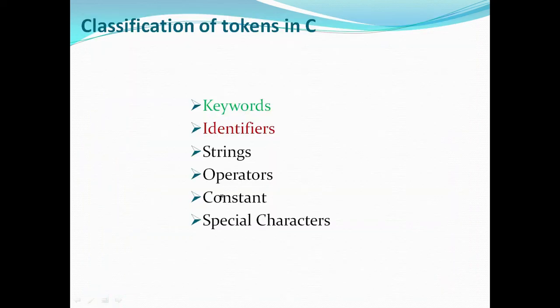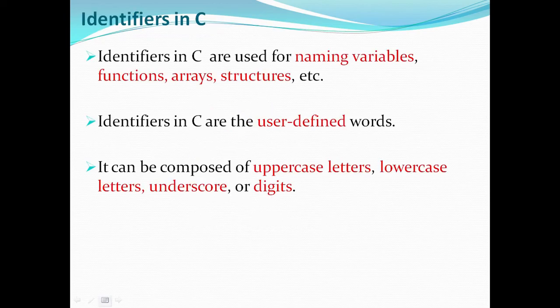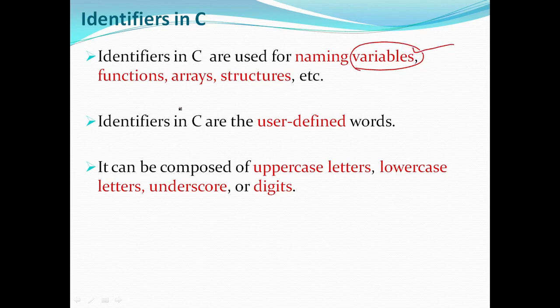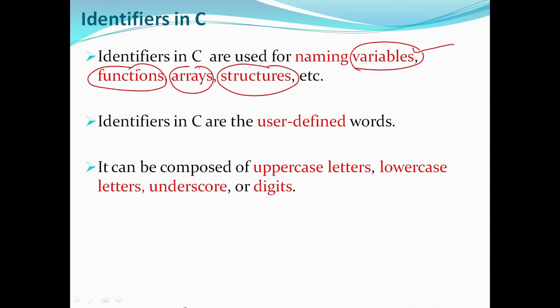These keywords will be used only by the compiler. Coming to the identifiers: identifiers are used for the name of variables, functions, arrays, structures, unions, and enums. In C, identifiers are user-defined words — they are not reserved keywords.